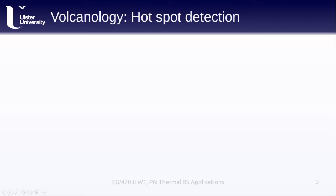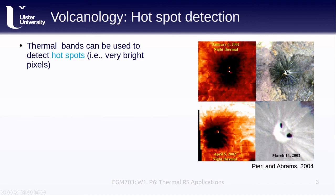The first volcanology application we'll cover is hotspot detection. A hotspot is defined as a pixel or group of pixels that are significantly brighter—which is to say, hotter—than the surrounding pixels. In these thermal band images, we can see clearly that most of the volcano is dark, meaning it's at lower temperatures, except for a few exceptionally bright pixels near the summit.